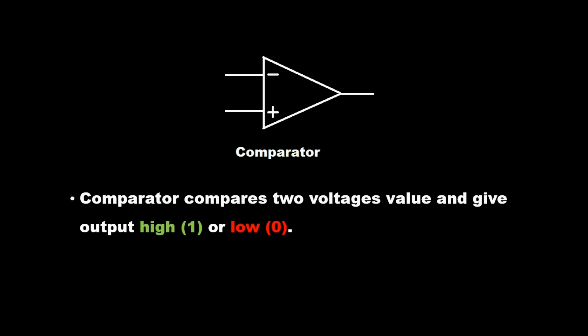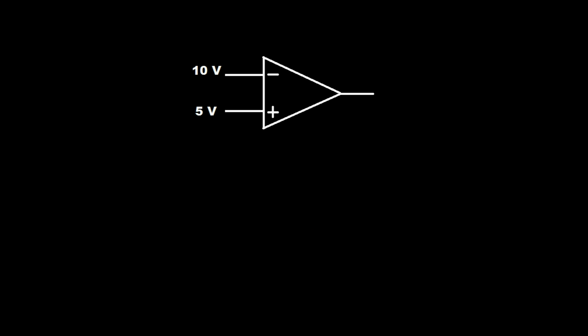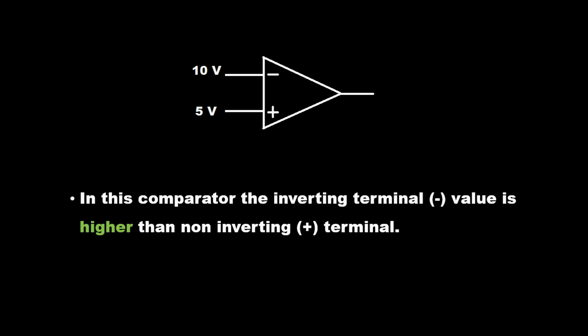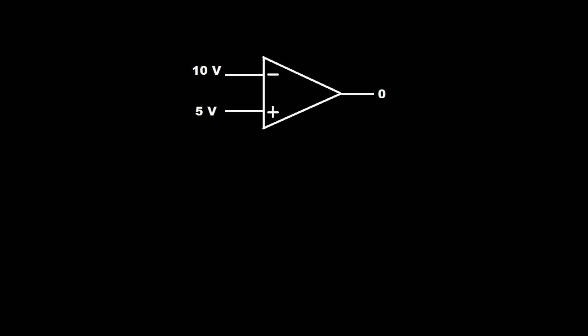Comparator compares two voltage values and gives output high (1) or low (0). In this comparator, the inverting terminal value is higher than the non-inverting (plus) terminal, so the output is low (0).